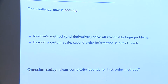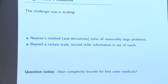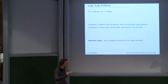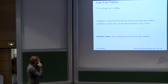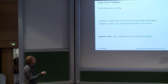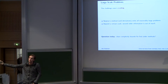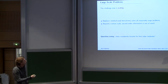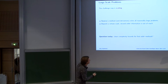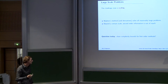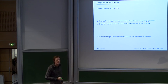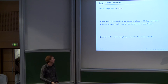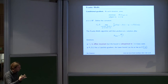The problem is that at a certain point your problem becomes too big and you can't even solve a single instance of the KKT system, let alone run several iterations of Newton's method. Beyond a certain scale, second-order information is out of reach — you cannot form the Hessian or solve the KKT system. And second-order information is what makes Newton's method affine invariant. So people drop second-order information and use gradients instead. But the question is: can we get similarly clean complexity bounds for first-order methods that are tight enough to say something truly meaningful?